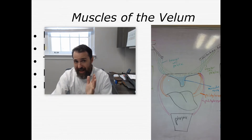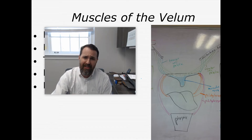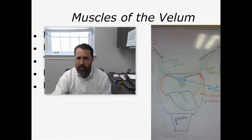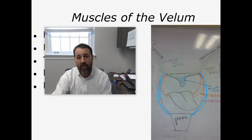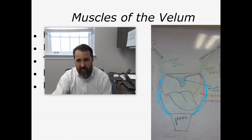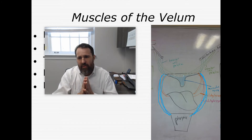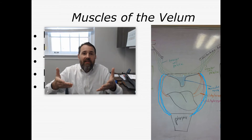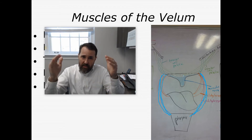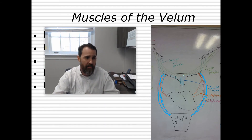If you look past the anterior faucial pillars, you're going to see the posterior faucial pillars, and that is the palatopharyngeus muscle, right here. It runs from the soft palate down past the tongue to insert into the pharynx. The palatopharyngeus muscle is going to either elevate the pharynx or pull down on the velum.